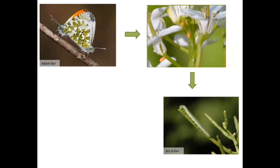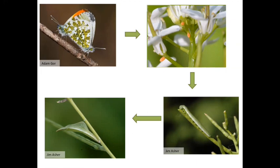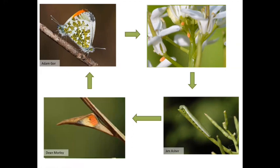The caterpillars hatch out in a couple of weeks and feed for four to six weeks mostly upon the developing seeds. After reaching a certain size they crawl off and find another plant — shrubs, fence posts or anything hard. They form this thorn-like chrysalis and stay that way throughout the entire winter, only coming out the following year as an adult butterfly.